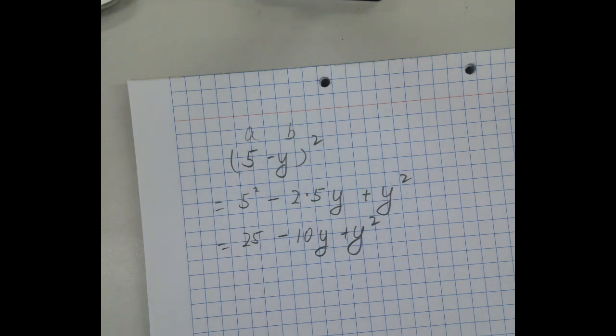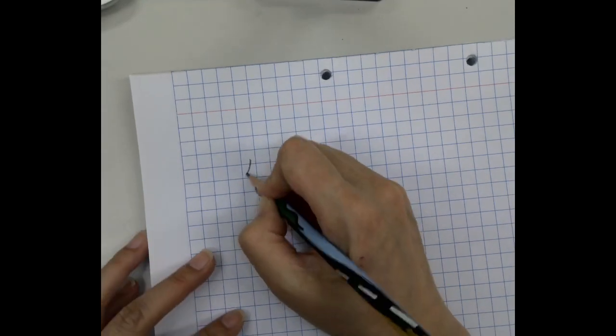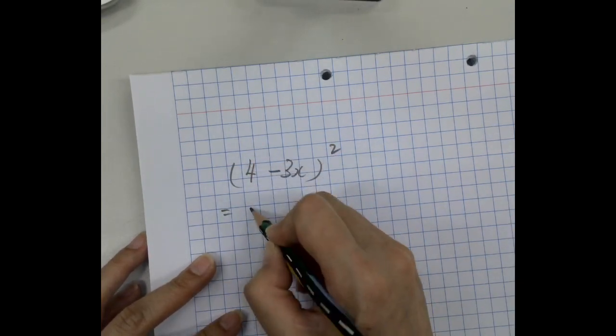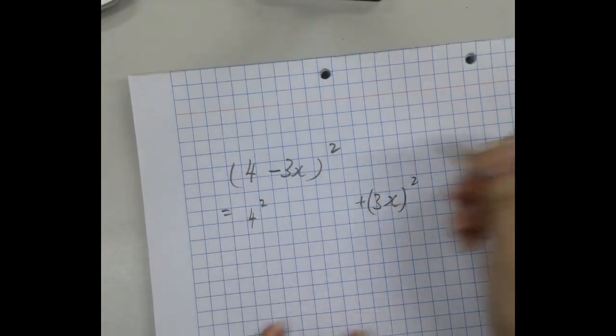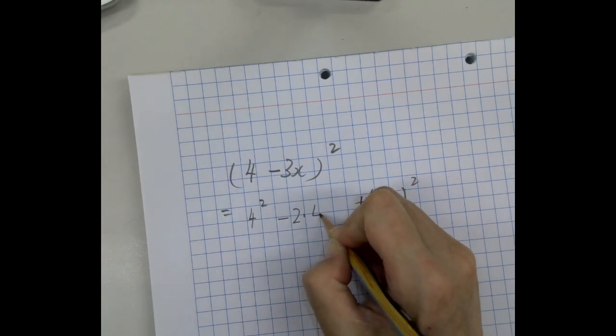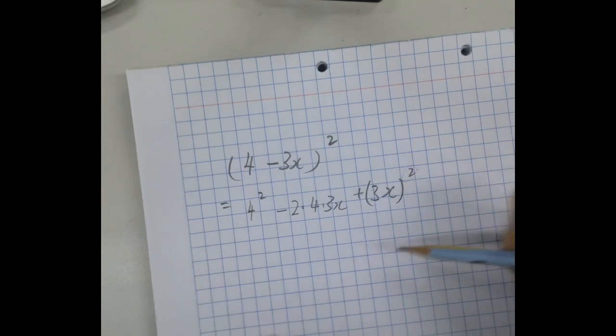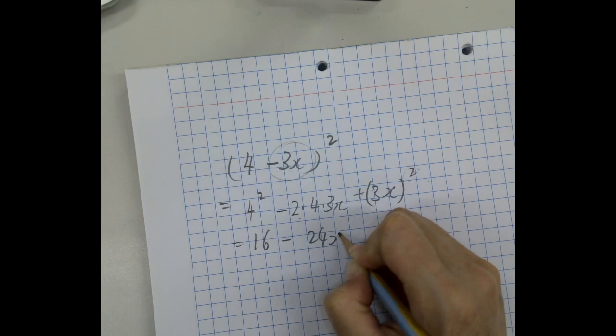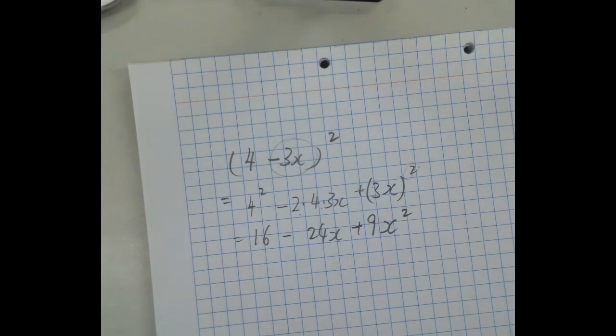And now we're going to do something even more exciting, is when the number is not just y, we have something stronger. So we could have (4 - 3x)². And then we do the same thing. The first one squared. The last one squared. The middle minus is a minus. It's 2 times 4 times 3x. The brackets is so important because students usually just give it to the x but not give it to the 3. It's supposed to be together. The whole thing is square. So we have 16 - 24x + 9x². So make sure when it's multiplied, you share the square to every one of them.